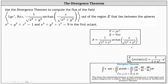We begin by determining the partial of P with respect to x, the partial of Q with respect to y, and the partial of R with respect to z. To find the partial of P with respect to x, we differentiate y e to the z with respect to x, treating y and z as constants, which gives the partial of P with respect to x equals zero.